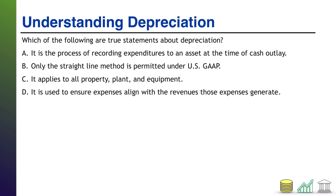Welcome back. I'm going to do the same thing — go top to bottom and talk about it. Depreciation. A: it is the process of recording expenditures to an asset at the time of cash outlay. That is actually the opposite of what depreciation does. The whole point of depreciation is that when you make the cash outlay, you capitalize the asset — you record it as an asset on your balance sheet. Then as the asset is used and time passes, you expense it. So you are not recording expenditures during cash outlay. A is not true.